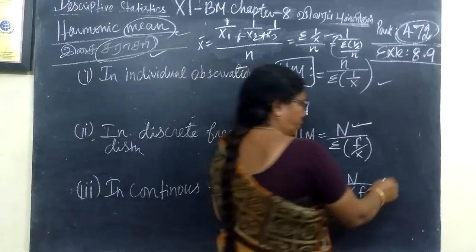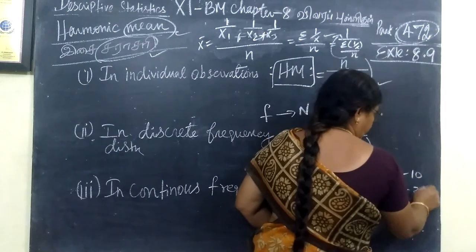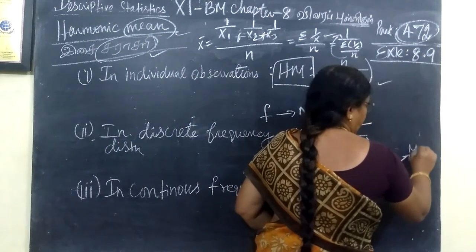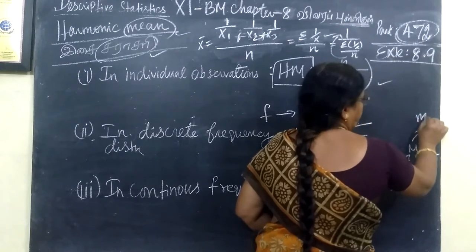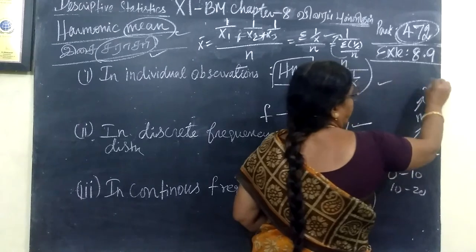Here is 0 to 10, 10 to 20. You are considering mid value. Here is the mid value M. This is the original x.